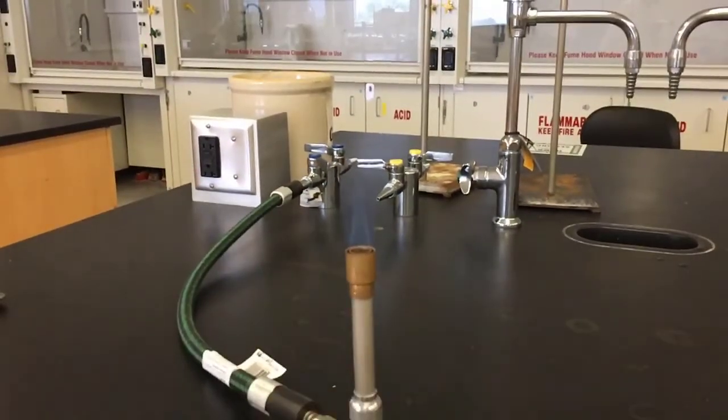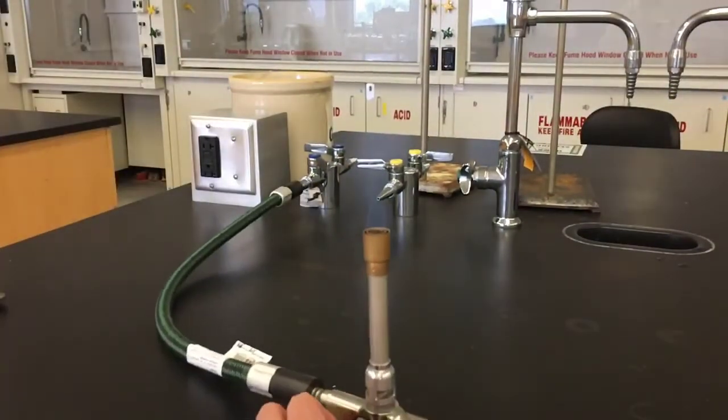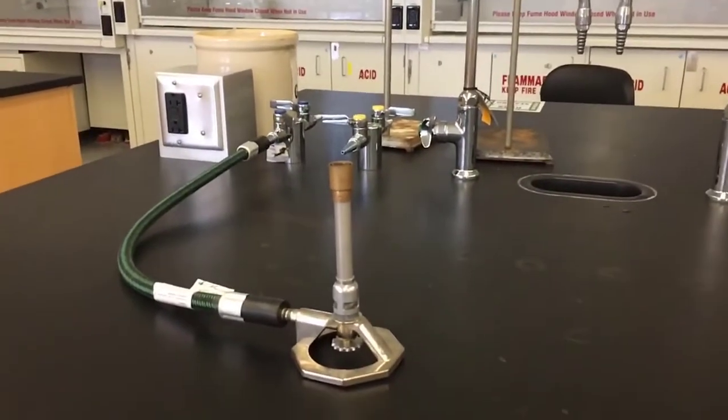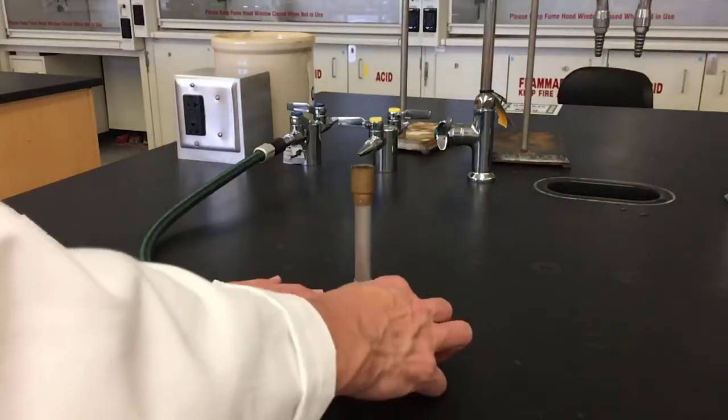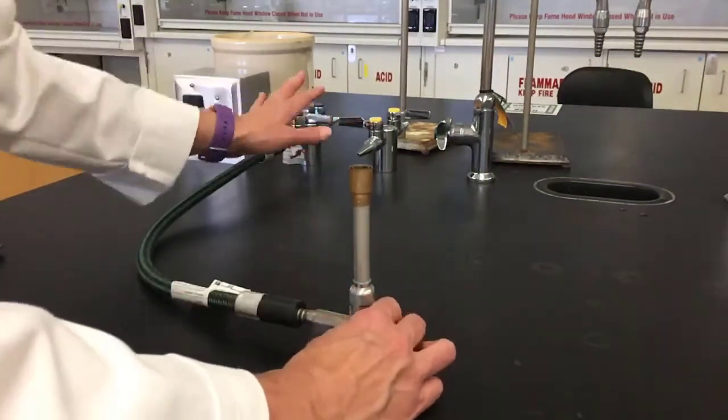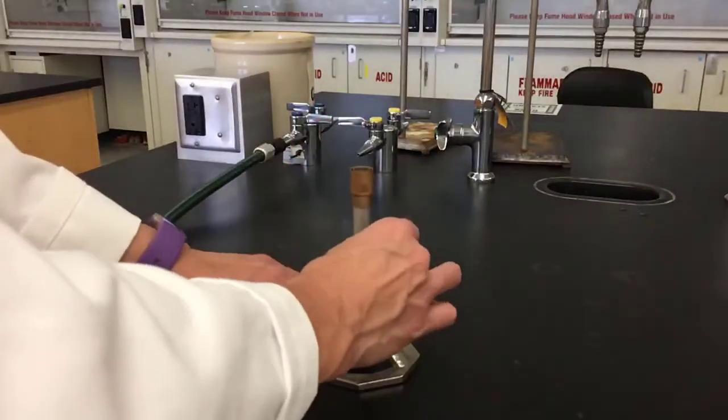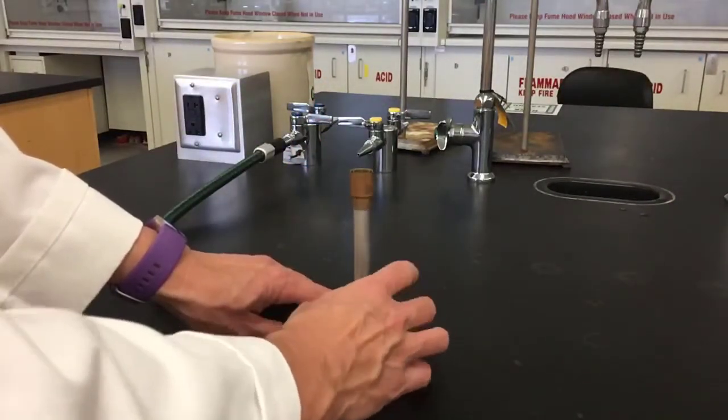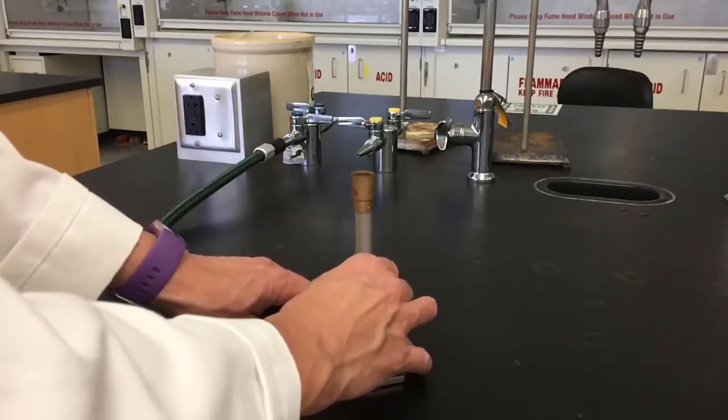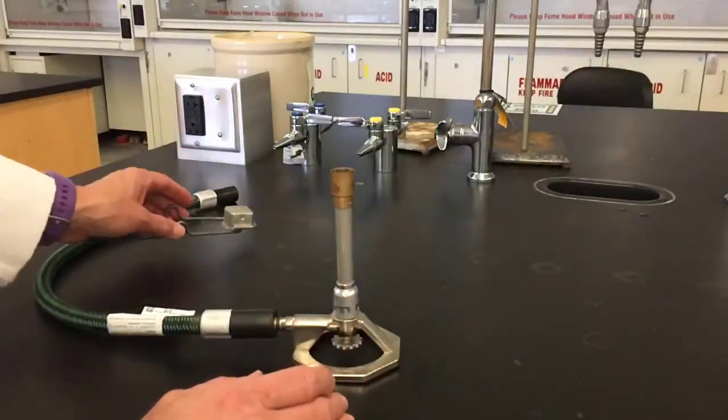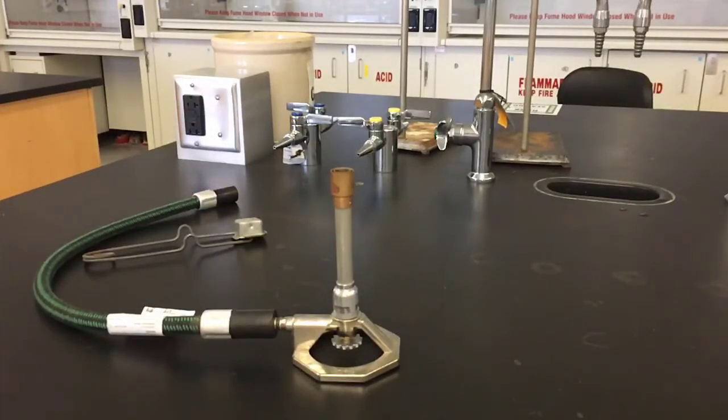When you're done with the flame and ready to turn it off, you would close the needle valve, close the gas jet, and then close the air vent. Once the air vent is closed, disconnect the hose from the gas jet. Then we are done with the Bunsen burner and can put it away.